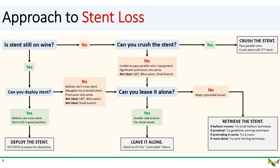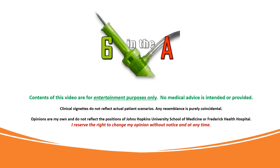If your stent is far down the vessel, you might try the wire twirling technique to pull it more upstream. In this technique, you pass multiple wires — generally three or four — through the stent and twirl them all together. Once the stent is entangled with the wires, pull everything back. Finally, if retrieval is unsuccessful, you'll need to call for surgical removal. Thank you for watching.